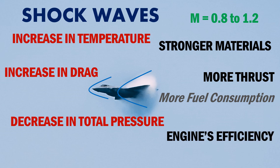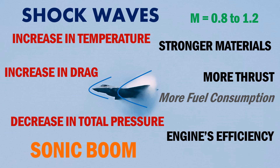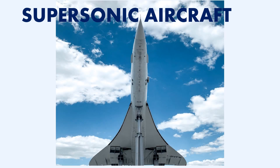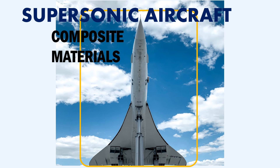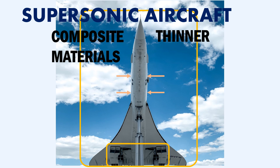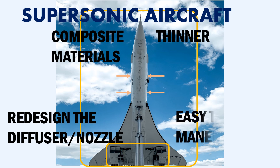The shock waves will also result in a sonic boom on the ground, which would be very loud and can even cause damage. So, how should a commercial supersonic aircraft be designed? A commercial supersonic aircraft must be built using composite materials that can withstand high temperatures and severe temperature variations. The wings and fuselage would be thinner to reduce the effects of drag due to shock wave formation. The engine's diffuser section and nozzle section have to be redesigned to reduce losses and improve fuel efficiency at supersonic speeds.